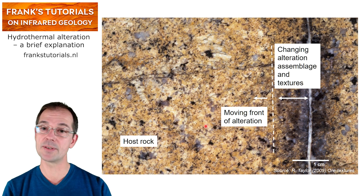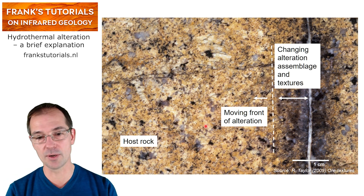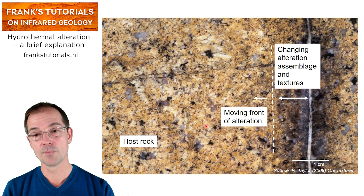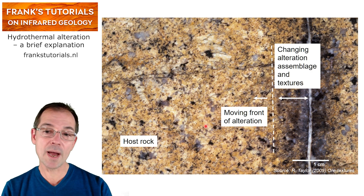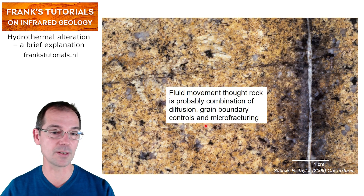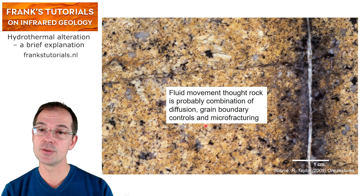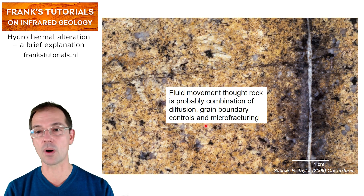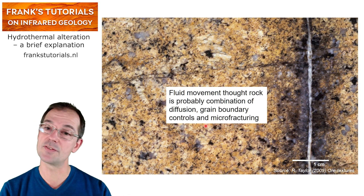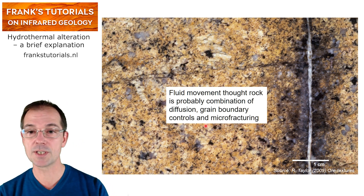Away from the channel way, you can see that the intensity decreases. What we can interpret from this is that there is a moving front of alteration, which might move away from the fracture when alteration continues and alteration intensity increases. What we need in order to alter the rock is fluid movement through the rock, not only adjacent to the fluid pathway represented by the fracture filled by quartz, but also in the host rock adjacent to it.